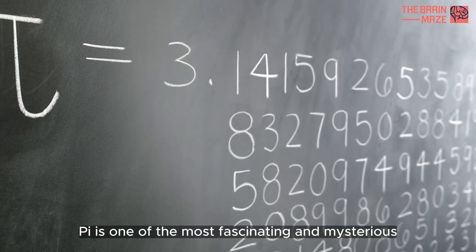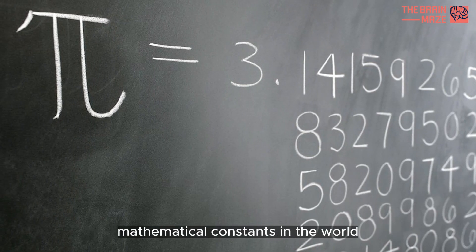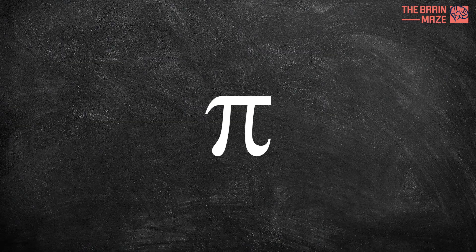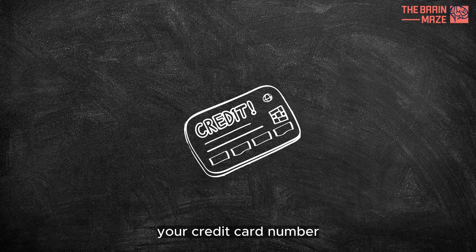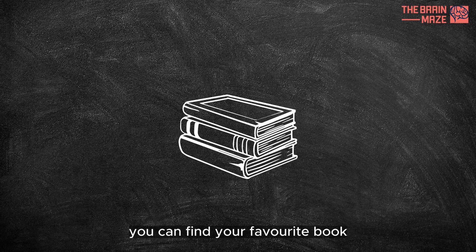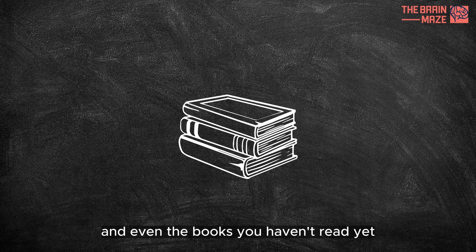Pi is one of the most fascinating and mysterious mathematical constants in the world. In this single number, you can find your birthday, your credit card number, and if converted to text you can find your favorite book, and even the books you haven't read yet.